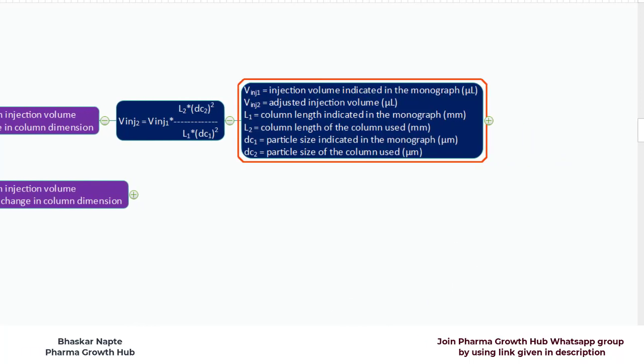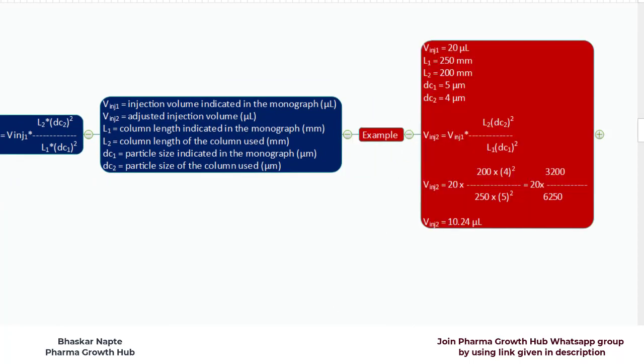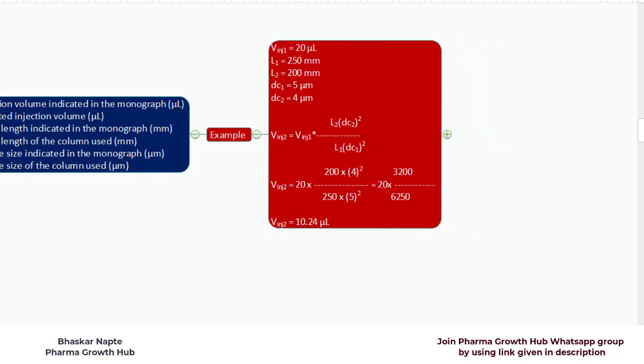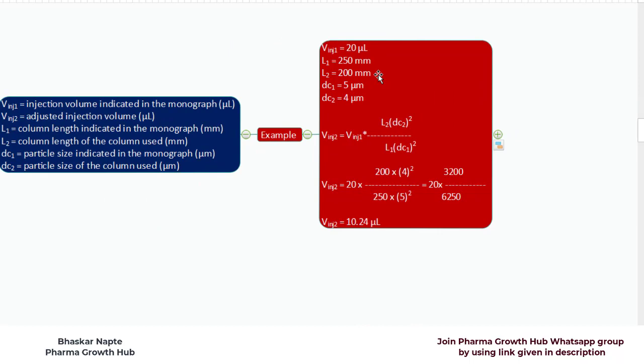Now let me explain the calculation of the injection volume with help of a very simple example. Here is the example on your screen. V injection 1, the injection volume indicated in the monograph, is 20 microlitres. The length of the column as per the monograph method is 250 mm — that is L1. L2, the length of the column you want to use, is 200 mm.